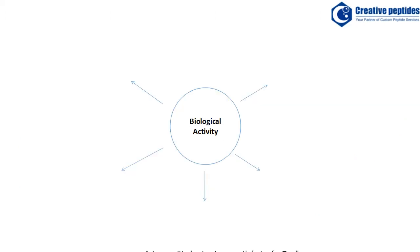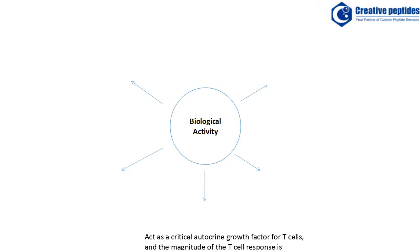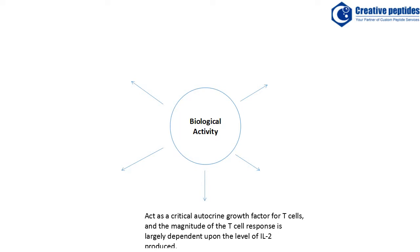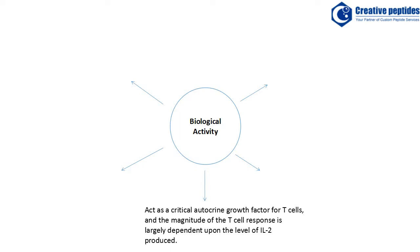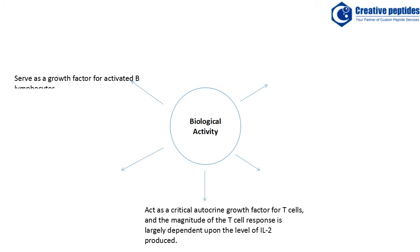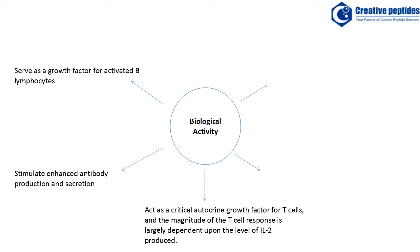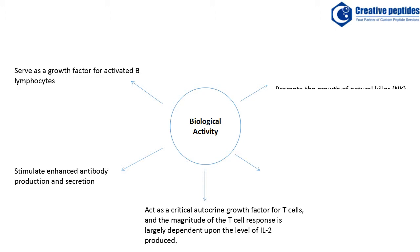Interleukin-2 acts as a critical autocrine growth factor for T-cells, and the magnitude of the T-cell response is largely dependent upon the level of interleukin-2 produced. Interleukin-2 also serves as a growth factor for activated B lymphocytes. In addition to promoting proliferation of these cells, interleukin-2 stimulates enhanced antibody production and secretion, effectively potentiating the humoral immune response.